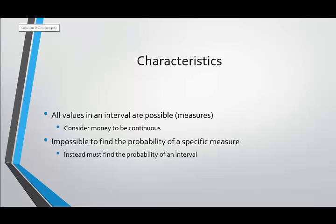The other thing that comes out of this is it's impossible to find the probability of a specific measure. So imagine we're talking about weight, adult human weight, and you step on the scale in the morning and the scale says that you weigh 90 kilograms.